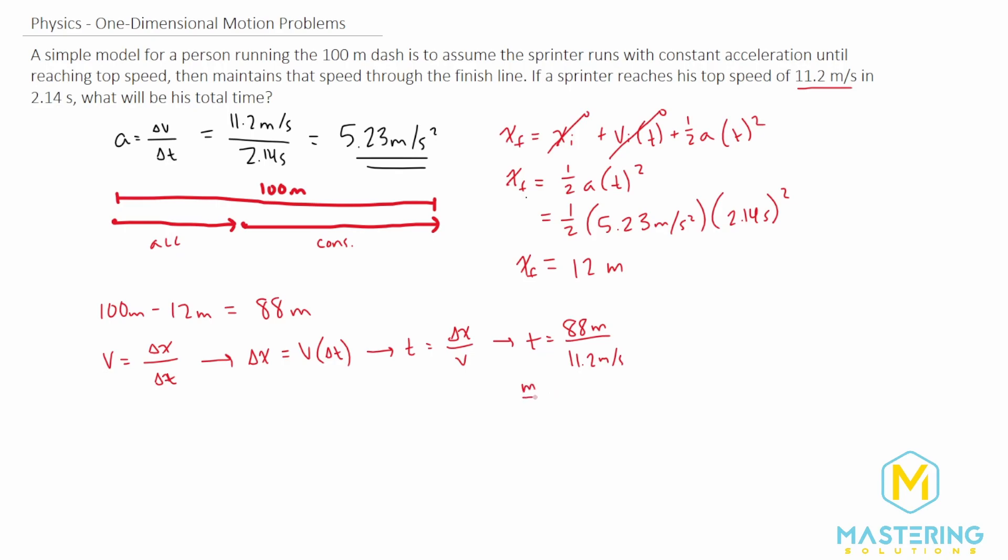Looking at the units, we have meters divided by meters per second. Dividing by a fraction is multiplying by the reciprocal. So meters times seconds over meters gives us seconds. We're doing the math correctly.